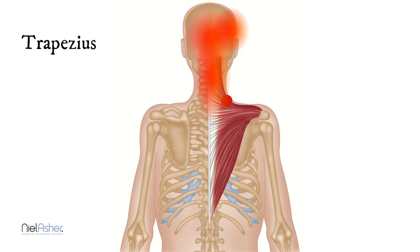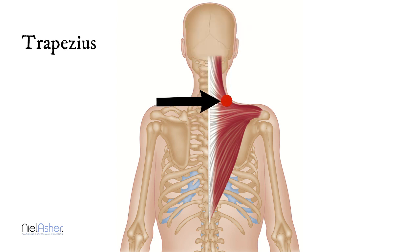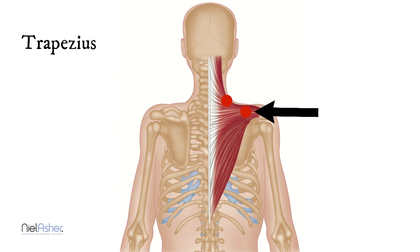This is the typical tension headache — an incredibly common human complaint — and trigger point number one is one of the most important causes of a classic tension headache. Trigger point two also occurs in the free edge of the trapezius muscle.